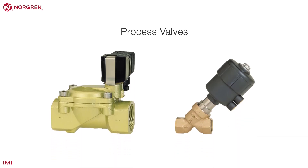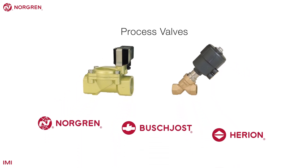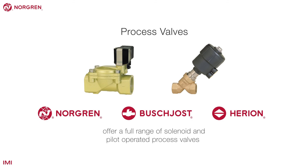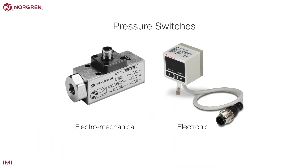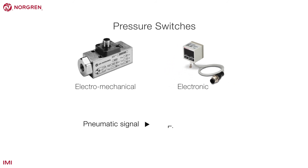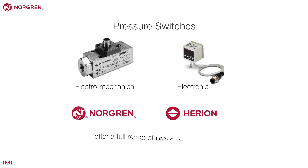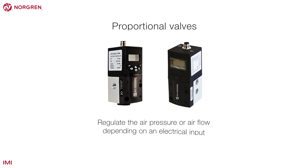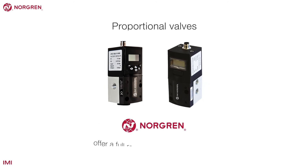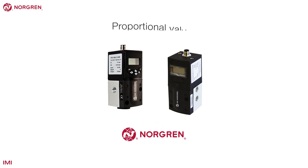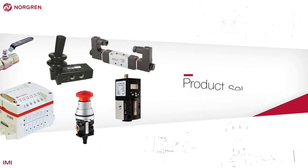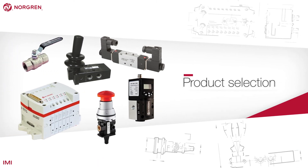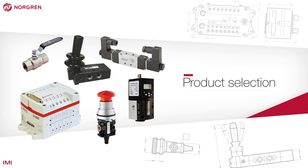Process valves control the flow of fluids and solids. Norgren, Buschost and Herion offer a full range of solenoid and pilot-operated process valves. Pressure switches can either be electromechanical or electronic — they take a pneumatic signal input and give an electrical signal output at a given point, and Norgren and Herion offer a full range. Proportional valves regulate air pressure or air flow depending on an electrical input, and Norgren offer a full range of proportional valves. There are a plethora of valves and options, some of which are very similar, as you will see in the catalogue.